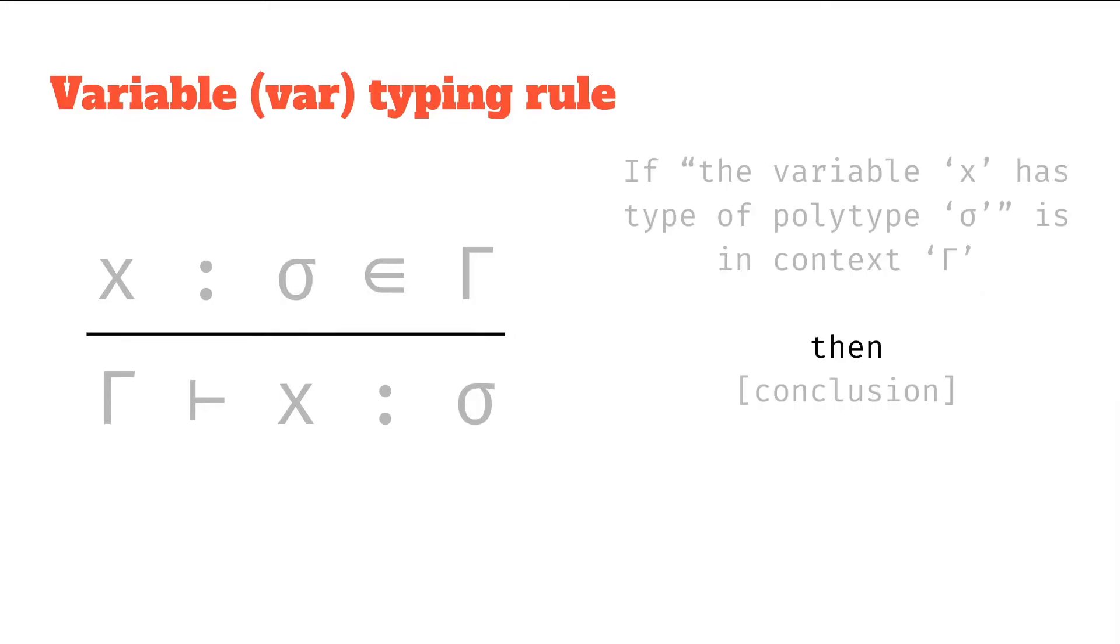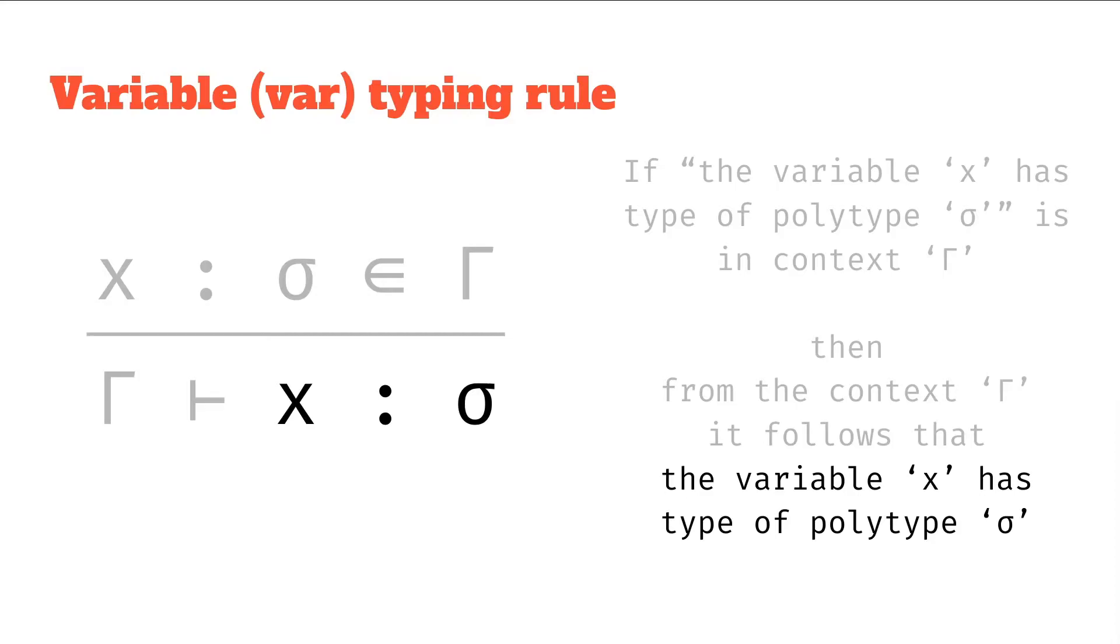So let's deal with the bottom half. We've got the ruler, which is the kind of then, implication bit. From the context gamma, it follows that. So we talked about this turnstile symbol, meaning it follows that. Then we've got the assignment again, so we're just stating the same thing, the variable x has type, a polytype sigma.